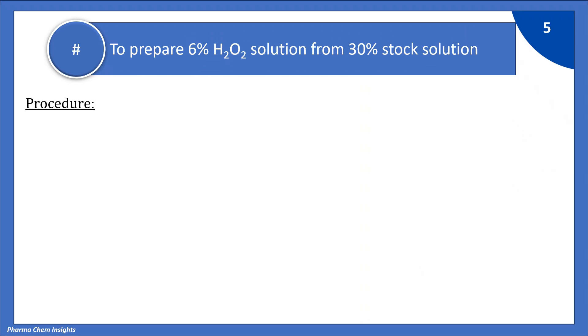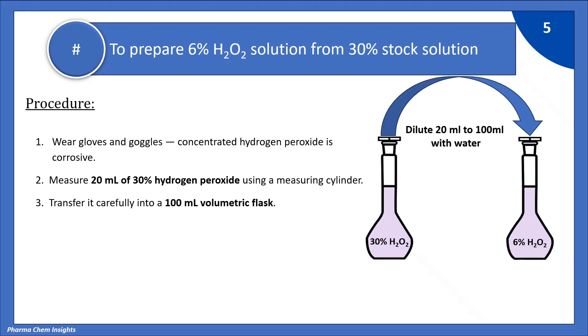Now, let's see the procedure to prepare 6% H2O2 solution from 30% H2O2 stock solution. For your safety wear gloves and goggles because concentrated hydrogen peroxide is corrosive. Measure 20 ml of 30% hydrogen peroxide using a measuring cylinder and transfer it carefully into a 100 ml volumetric flask. You can see in the figure right hand side.